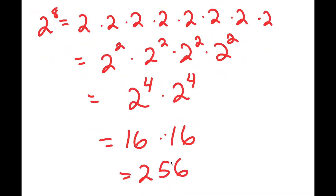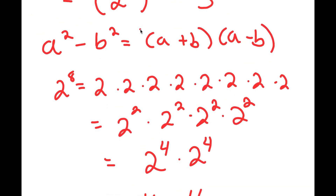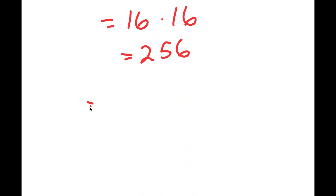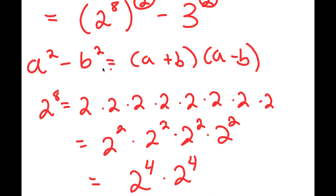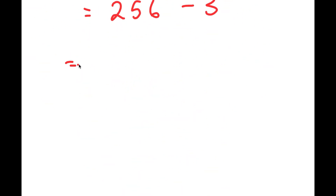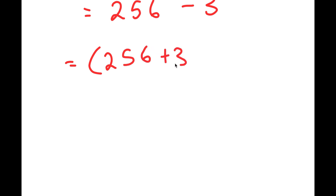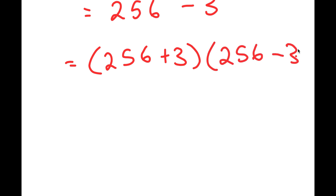Now from here, I'm going to plug this back in. So I get 256 squared minus 3 squared. And now I can more properly use this property. So this turns into 256 plus 3 times 256 minus 3.